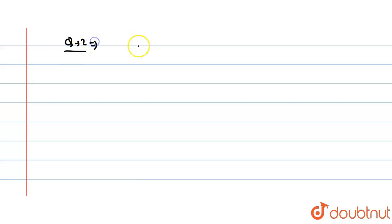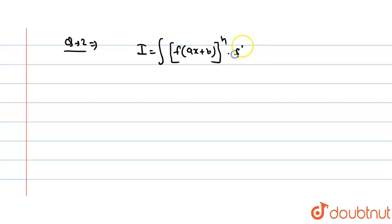Now question number two: let us consider I = ∫ [f(ax + b)]ⁿ · f'(ax + b) dx. Here we can see that if we assume f(ax + b) = t, then the differentiation of f(ax + b) is present in the integrand. So let f(ax + b) = t.